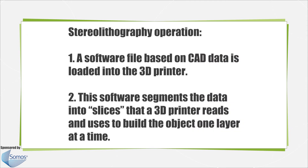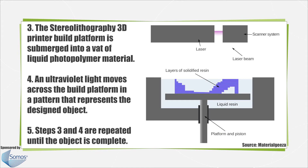The first step in the process involves a stereolithography machine being uploaded with a file containing a digital object that has been sliced into hundreds or even thousands of individual layers. The machine creates the first physical layer of the object by submerging a perforated metal platform into a vat of the photopolymer to a depth equivalent to the corresponding digital layer in the computer file.